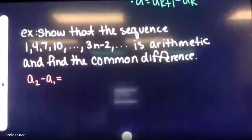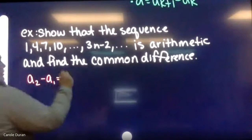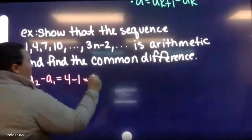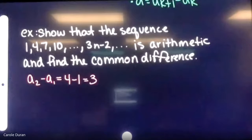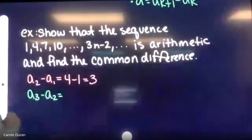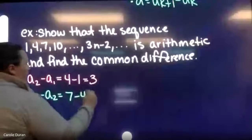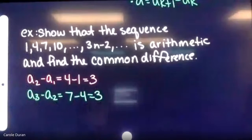First, term two minus term one: four minus one gives a difference of three. Next, term three minus term two: seven minus four again gives a difference of three. So far we're off to a good start.